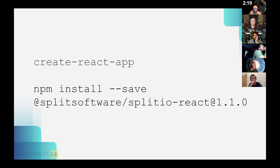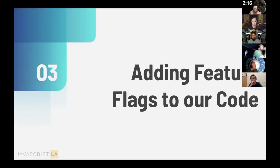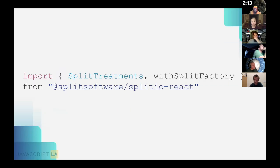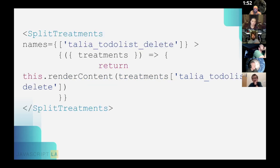Next step: install dependencies. Create your app with Create React App, then install the Split-specific dependency in your root folder. To add the feature flag to your code, at the top of your component import SplitTreatments and withSplitFactory from Split. SplitTreatments is a React component that performs feature evaluation used in the render function; withSplitFactory is a higher-order component used to wrap the to-do list component on export.